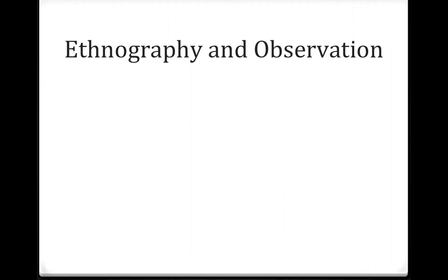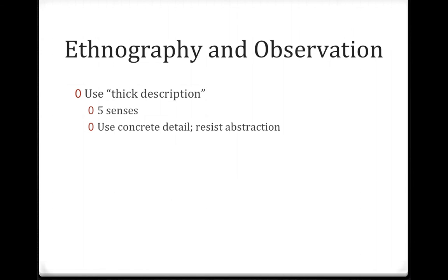One of the main pieces of the ethnographic puzzle is observation. When we're doing observation, the goal — and we'll talk more about this in the lecture on primary research — is to use what's called thick description, meaning to give as many details as possible. One way to think about that is using the five senses: what do you smell, hear, see, even taste, feel or touch. Using the five senses to develop as many details as you can. Also, if you're familiar with the ladder of abstraction, we can talk about any kind of idea on a continuum from concrete to abstract.